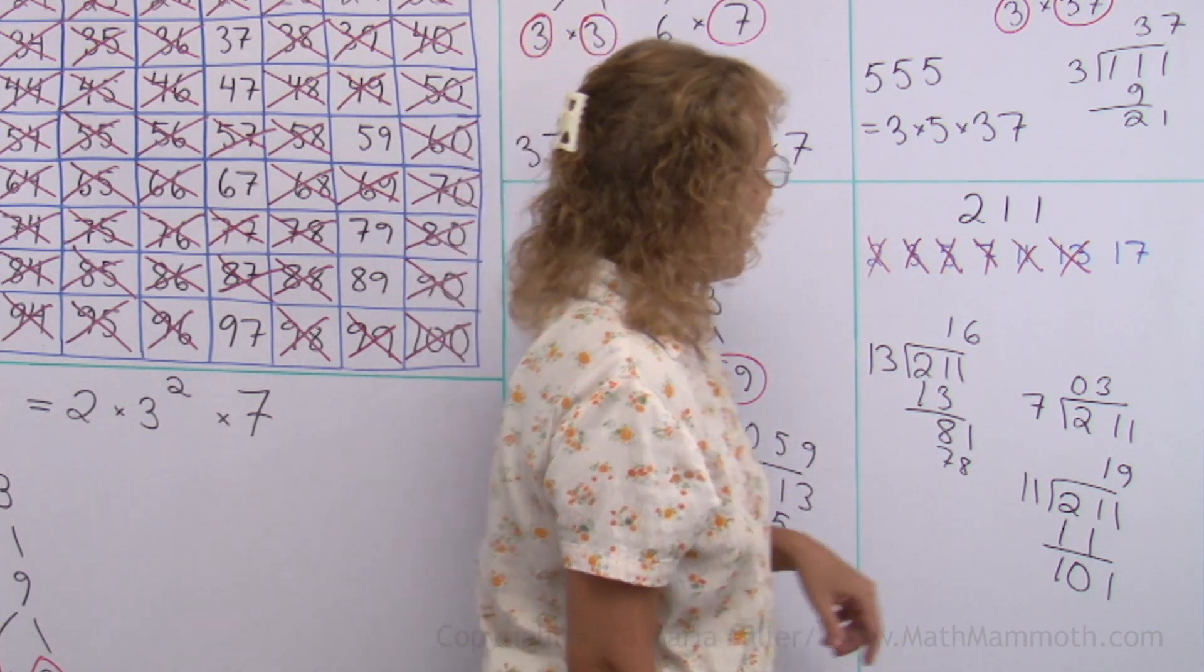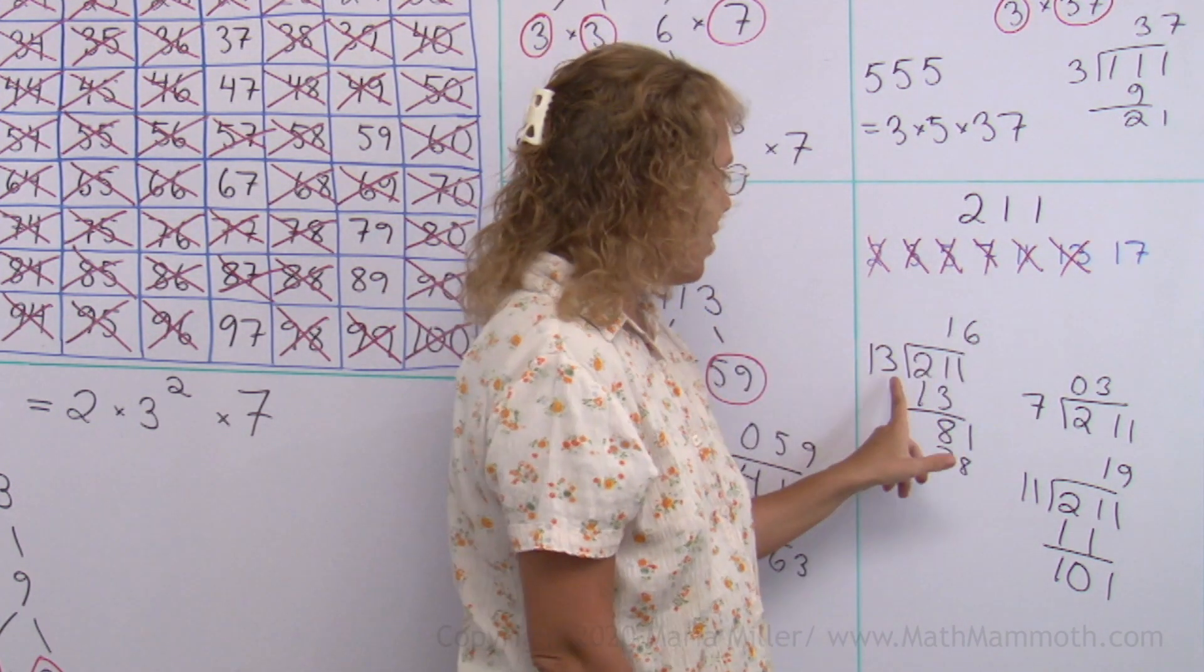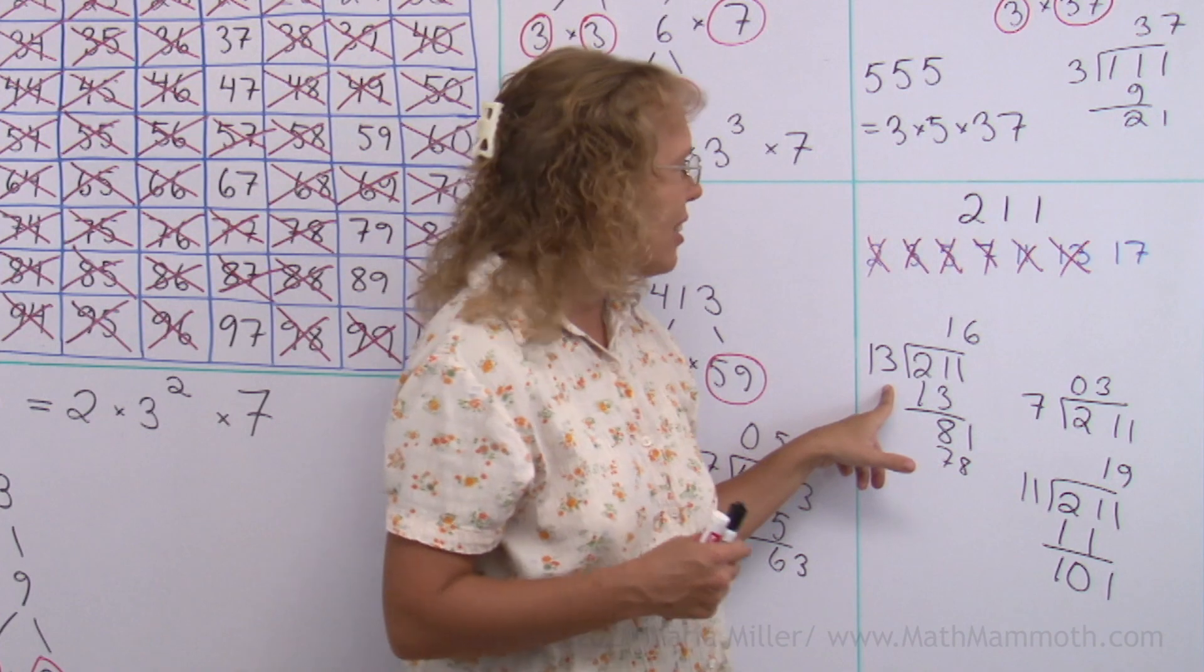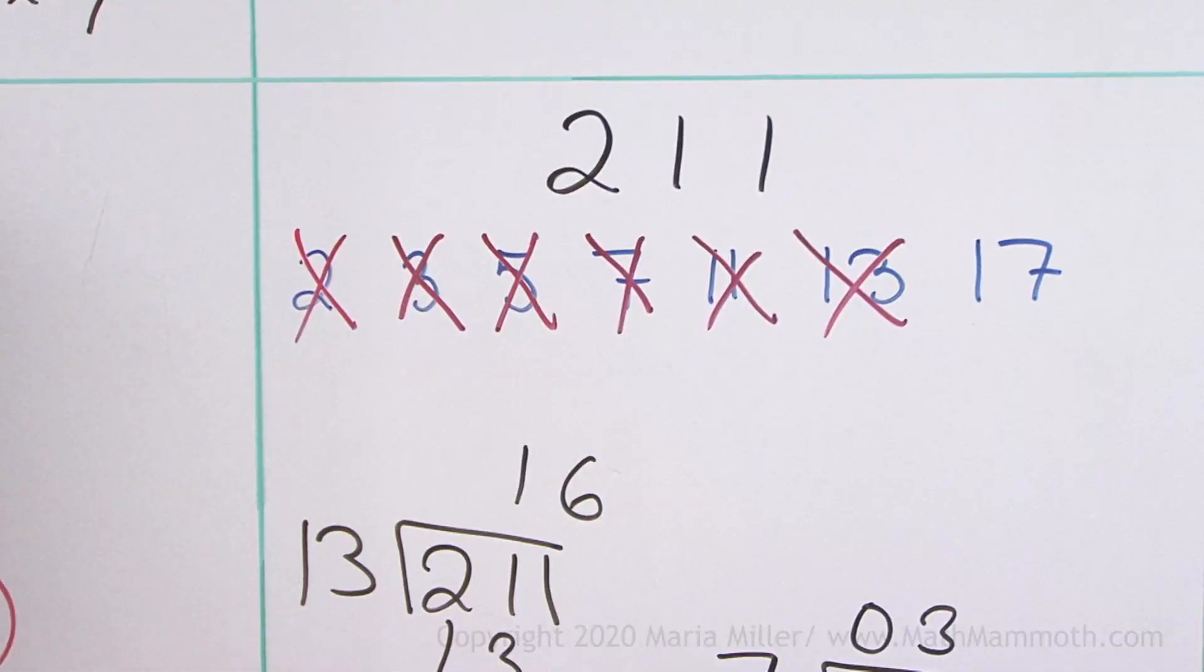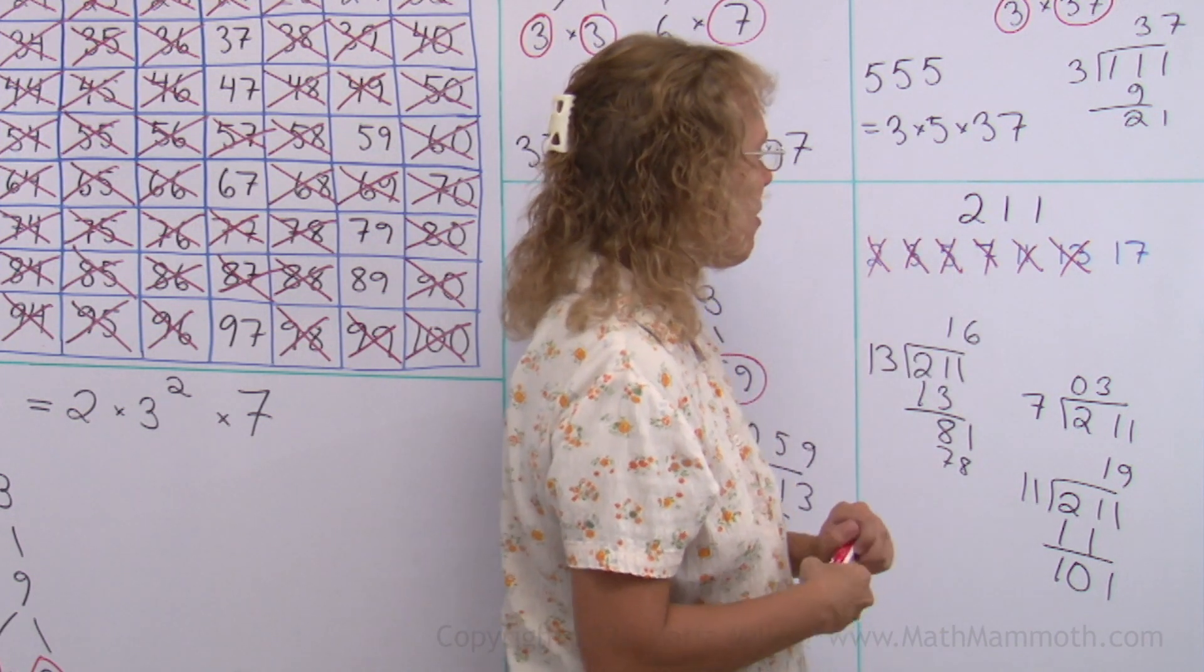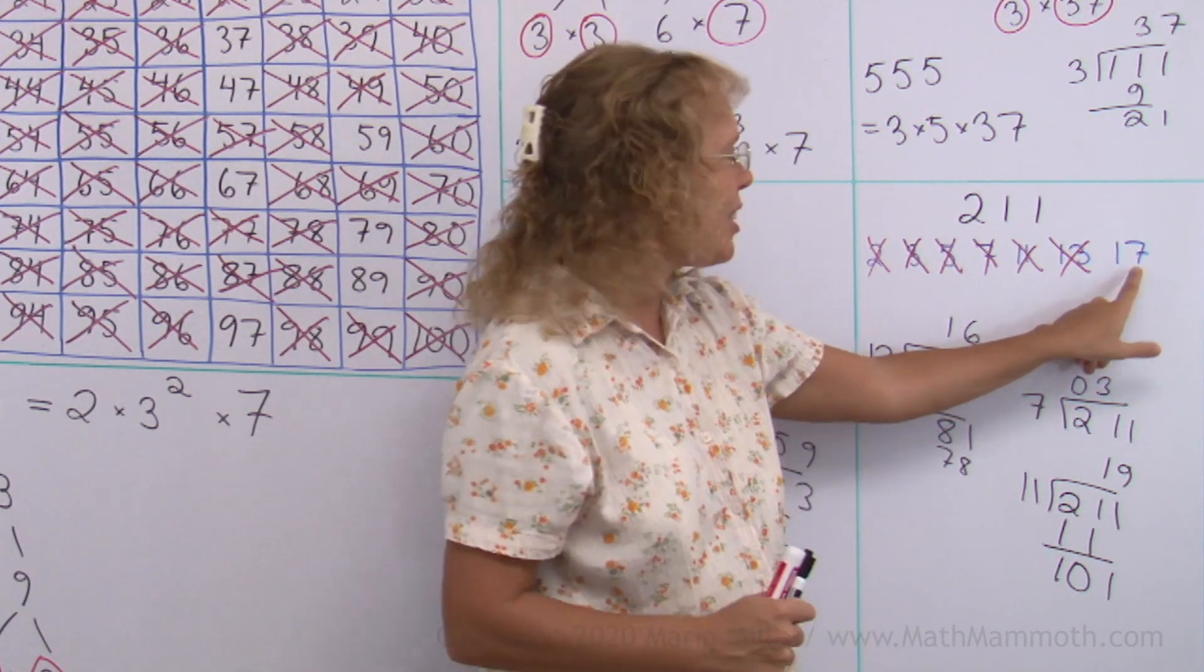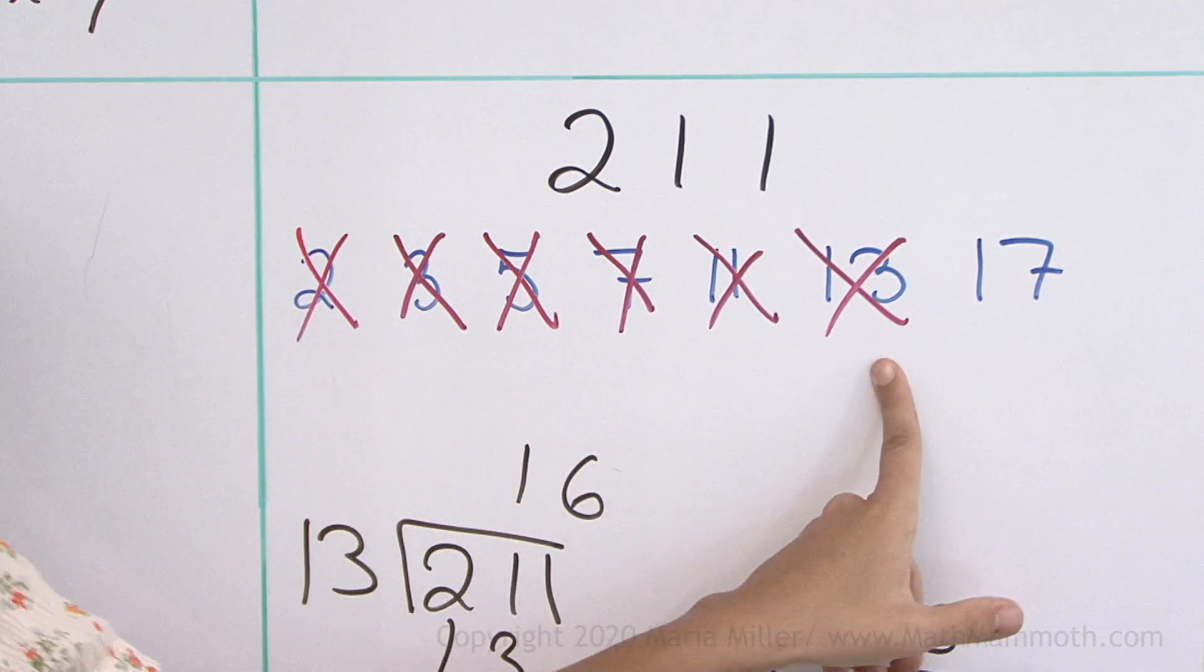And if I test divide it by 17, if I go 211 divided by 17, then it would be 17 times some smaller number than 17. If I have 13 times 16 here, then if I had 17 here, it would be 17 times some smaller number than 17. You can also see it if you remember that 15 times 15 is 225. So I do not need to test 17. One more time: if it was divisible by 17, it would be 17 times some smaller number. But I've already checked all the smaller numbers.